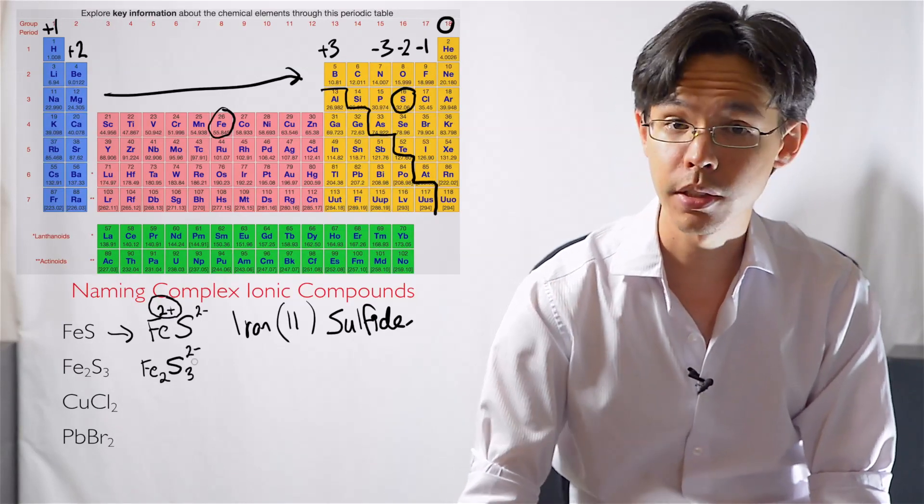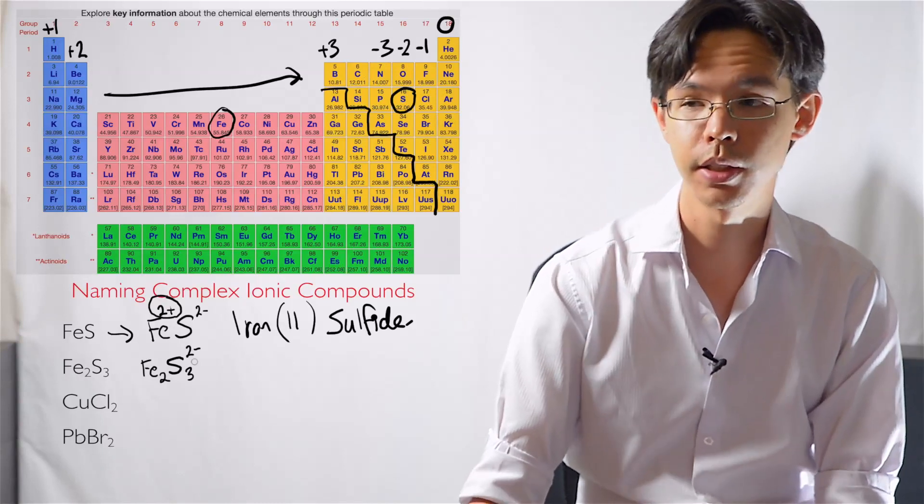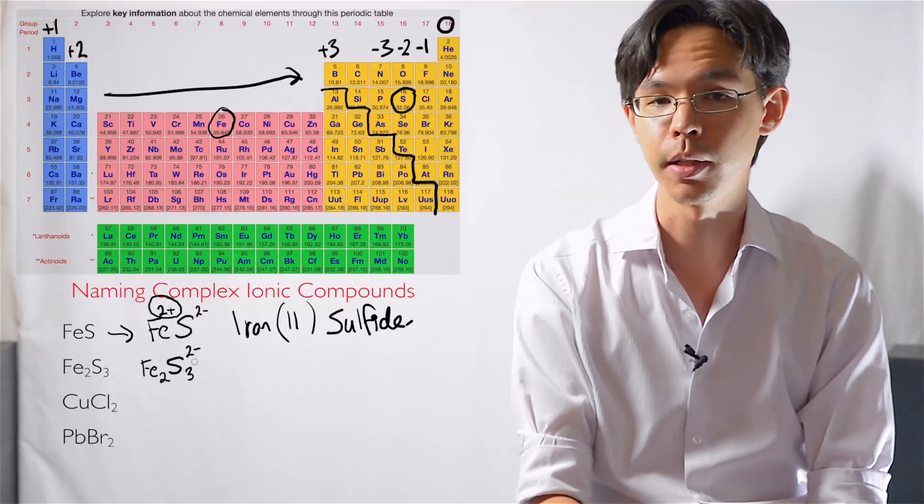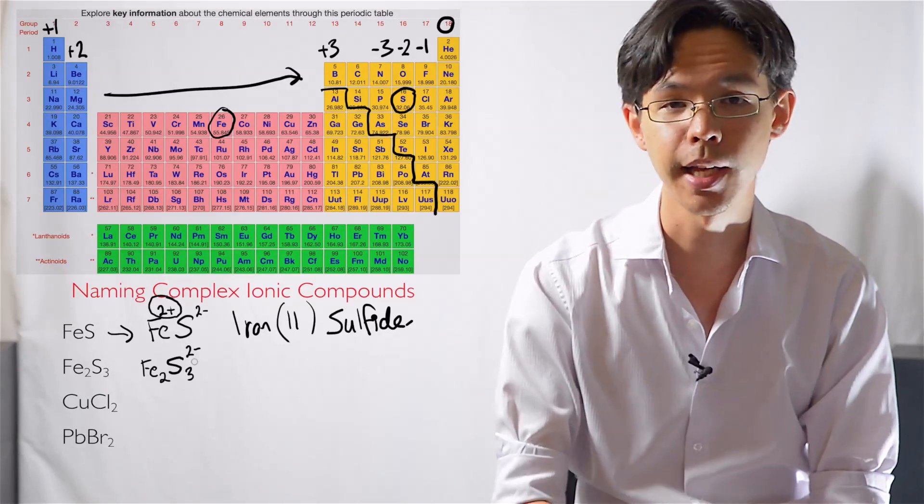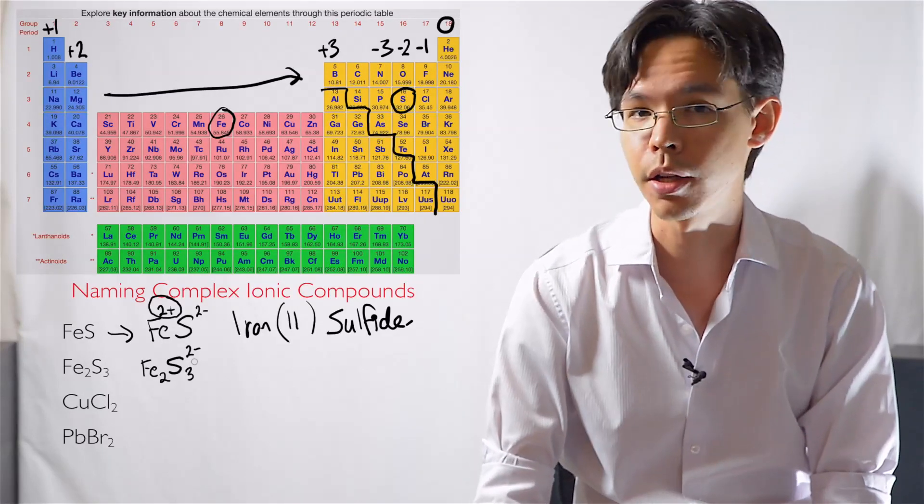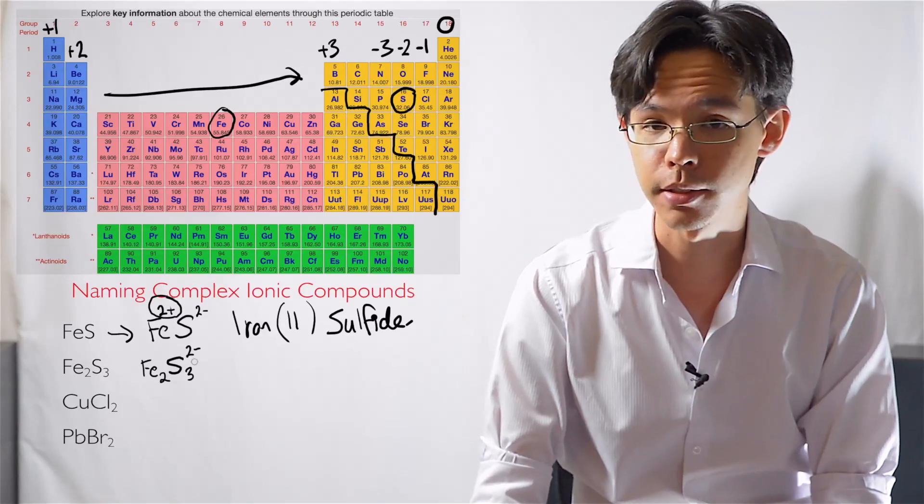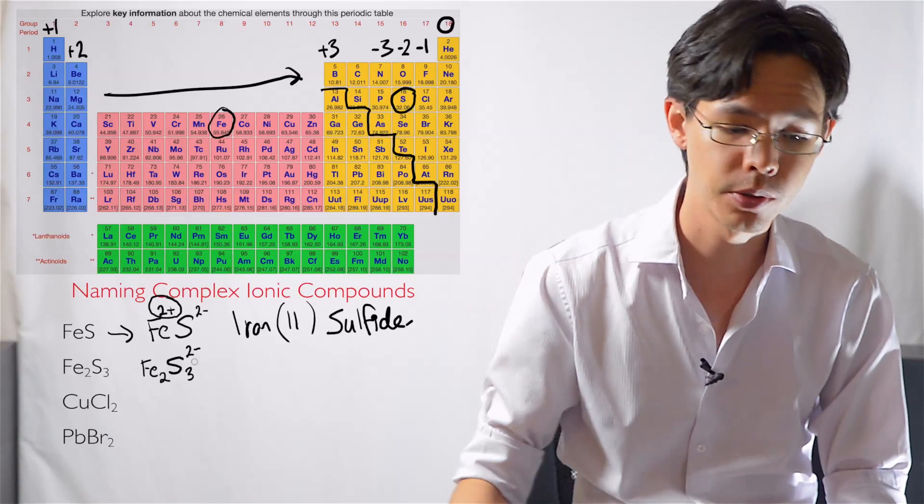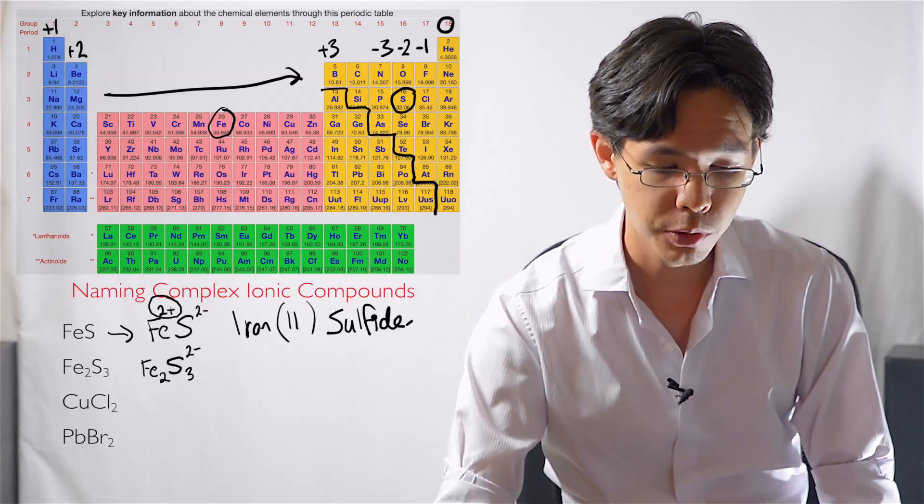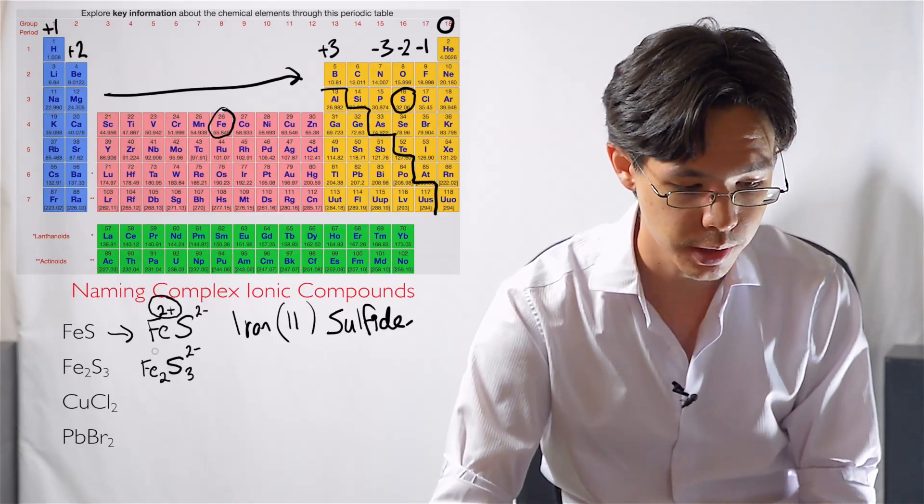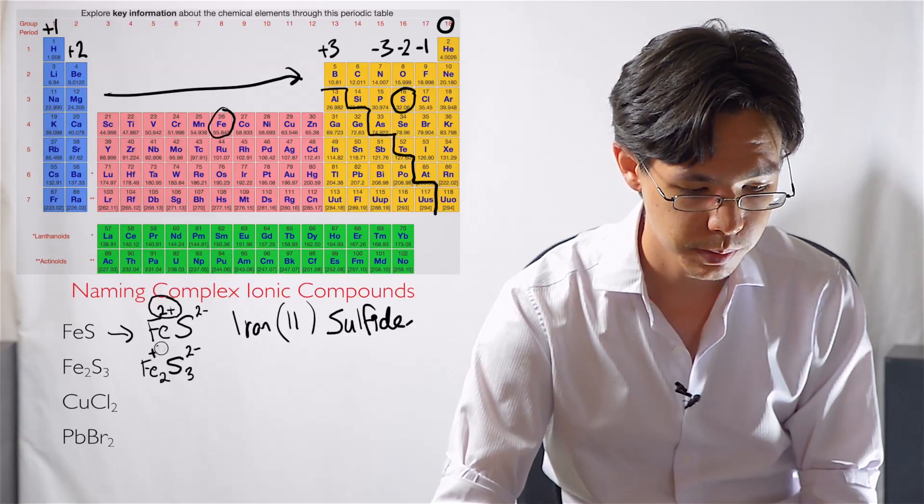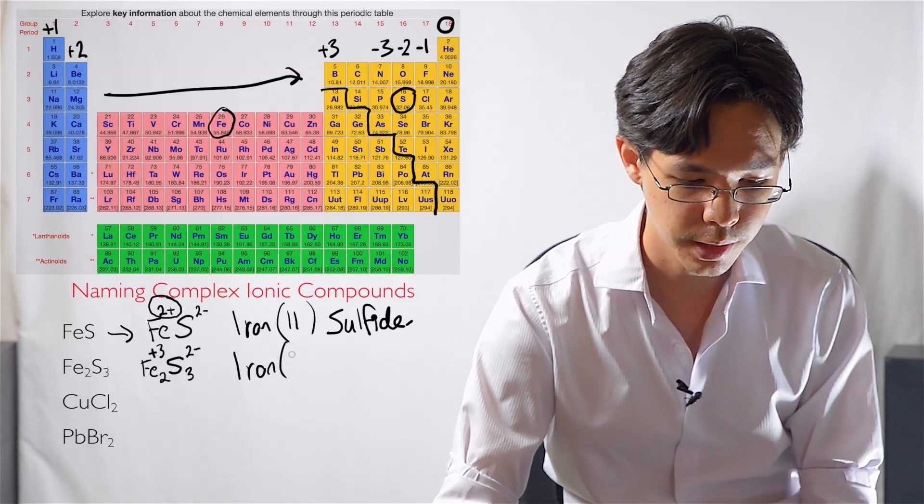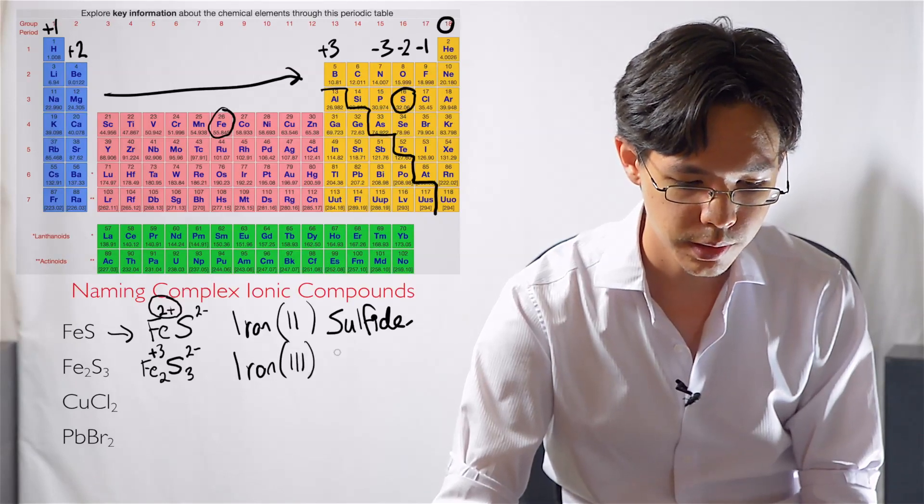they are each carrying a two negative charge. So three times two negatives gives a total of six negative charges. Somehow that has to be divided, has to be canceled out by the two iron cations. So if there's two of them, so six negatives divided by two metal atoms. Therefore, each one must be carrying a positive three charge. So therefore we write the name iron, brackets, one, two, three, sulfide.